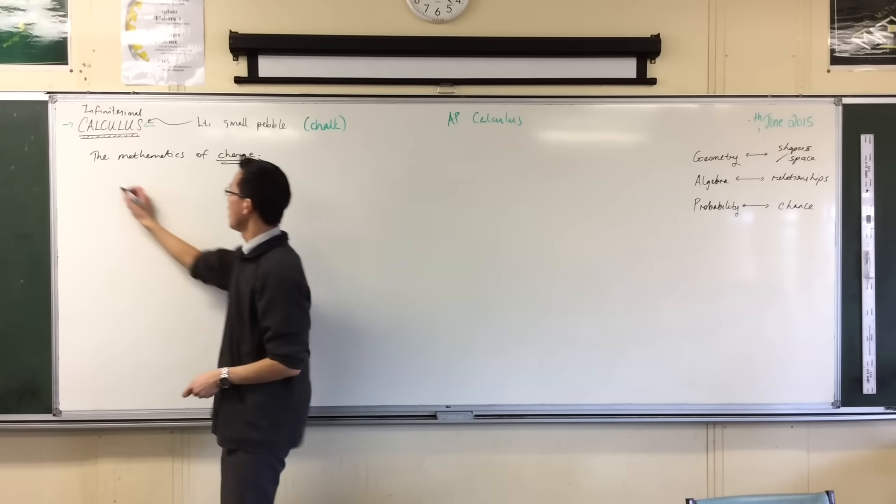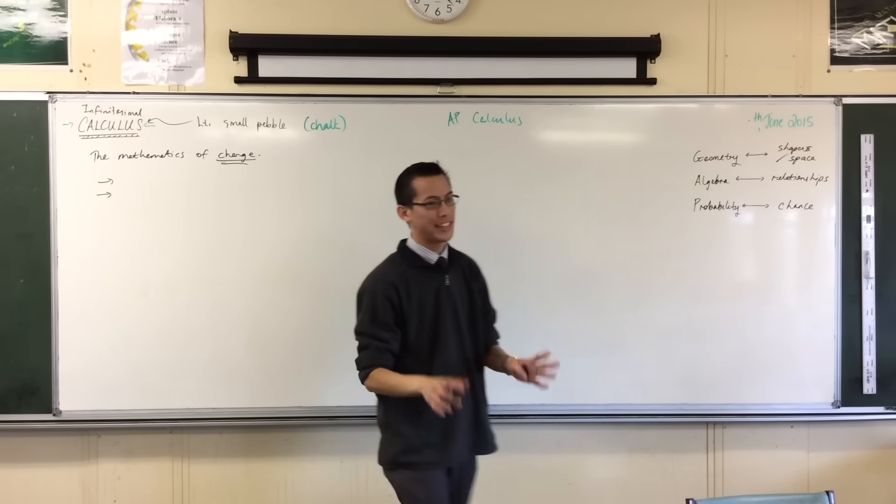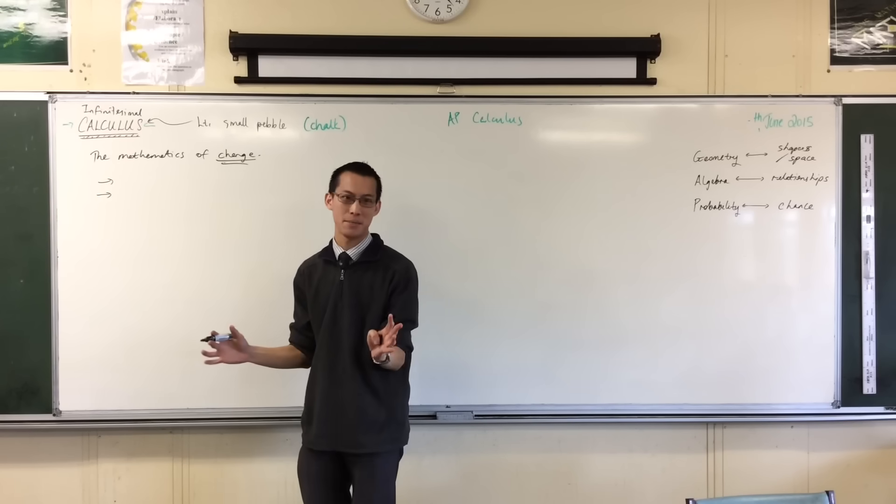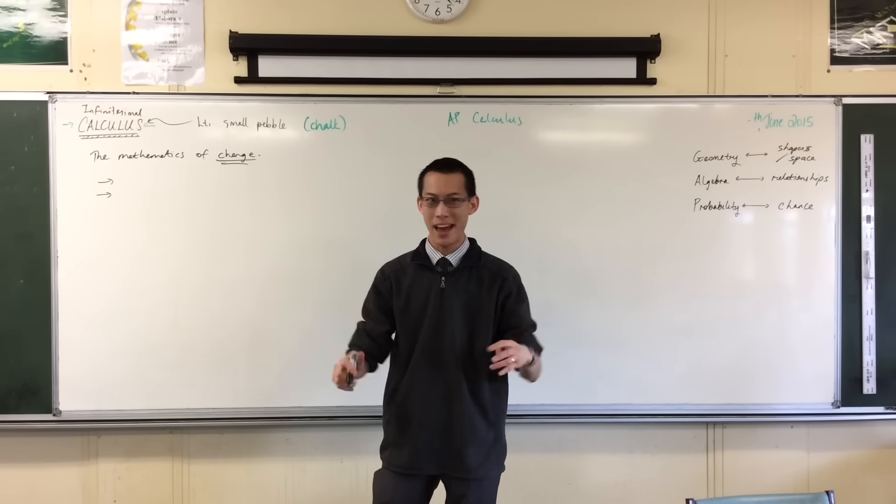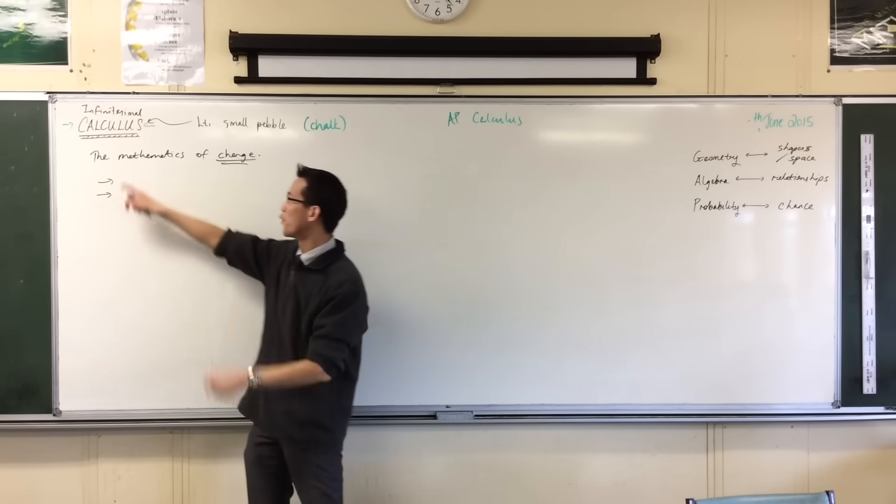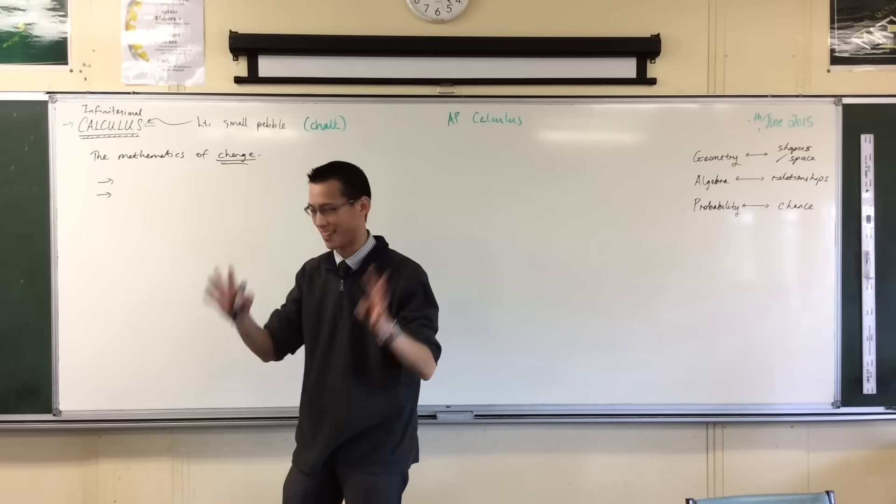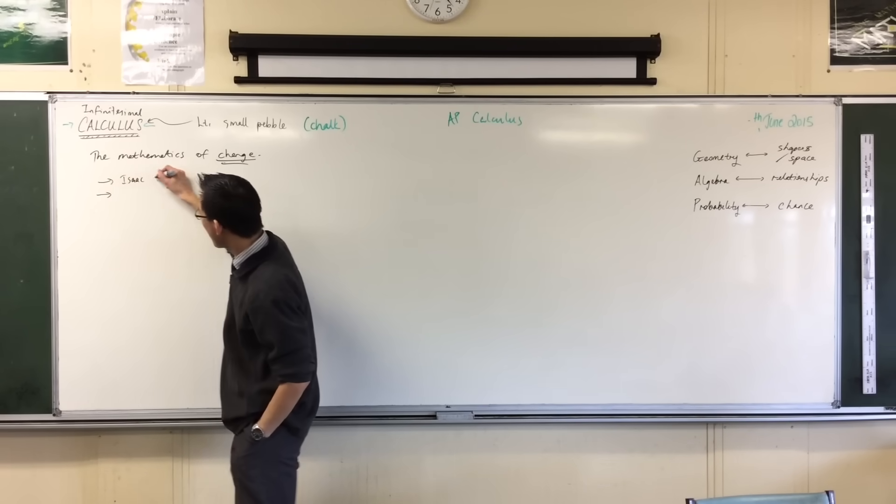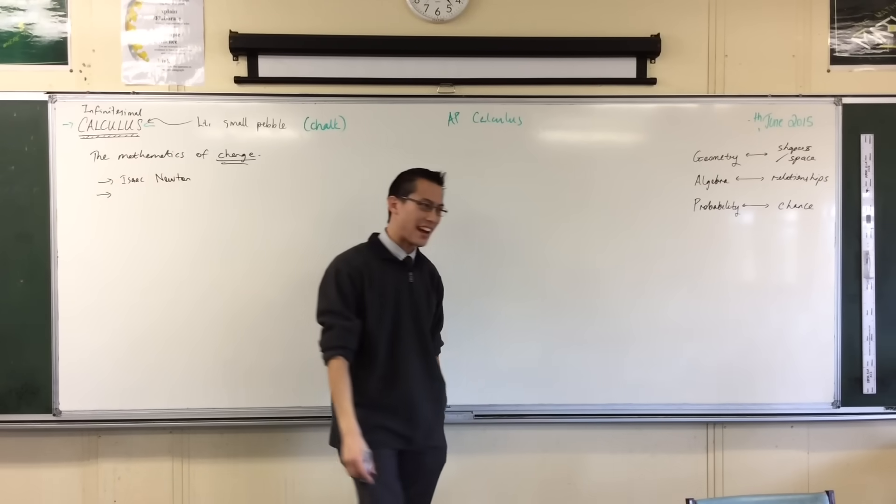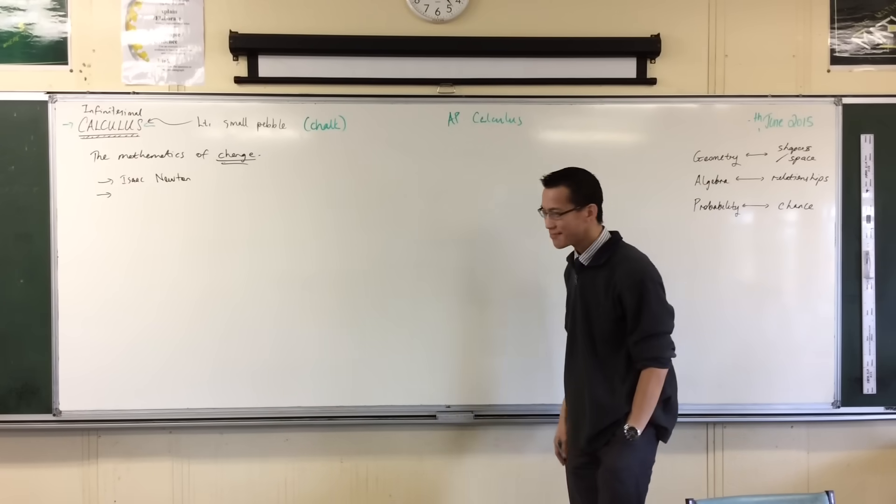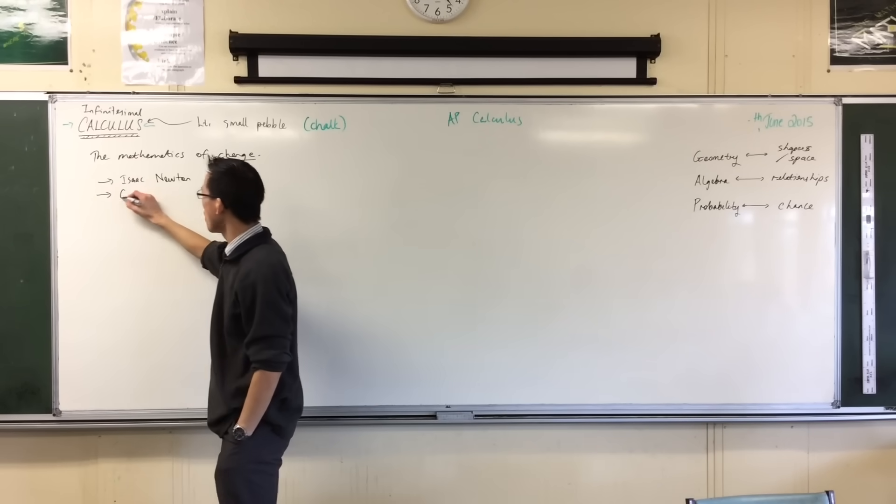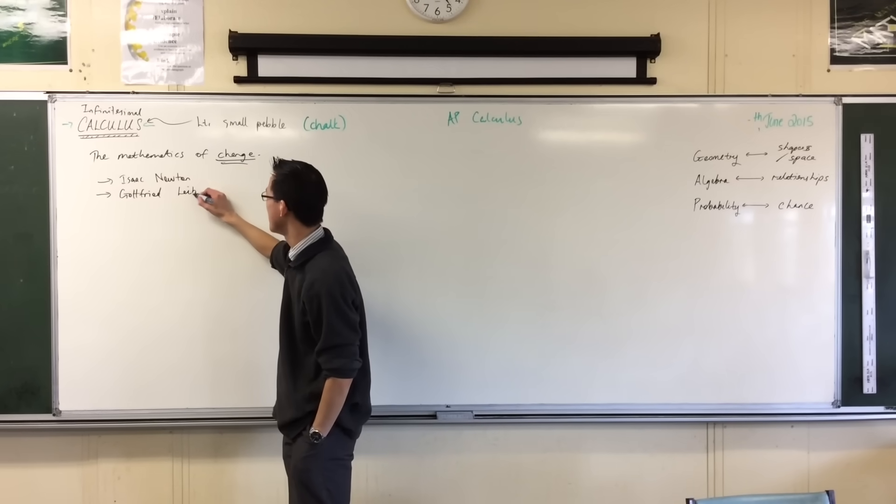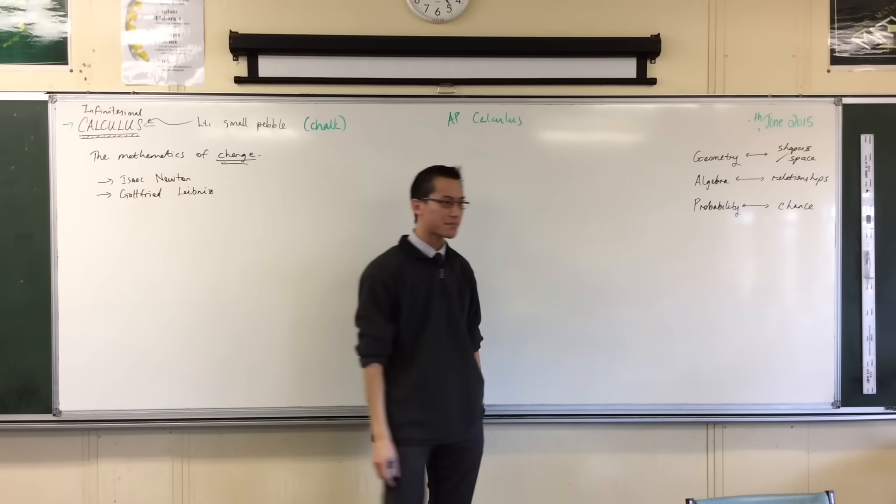Now calculus you need to know was developed not jointly but independently by two guys in two countries at exactly the same time. And there's a huge argument between these two as to who invented it. By the way, before it was called calculus it was called the calculus, the capital C calculus. The two guys are one who you might have heard of, a guy named Isaac Newton, guy in England. You might have heard of him.